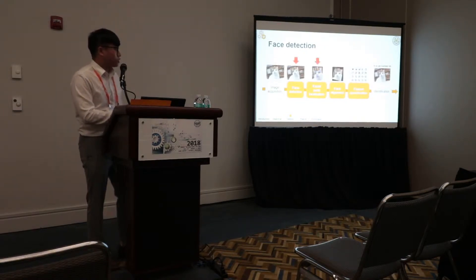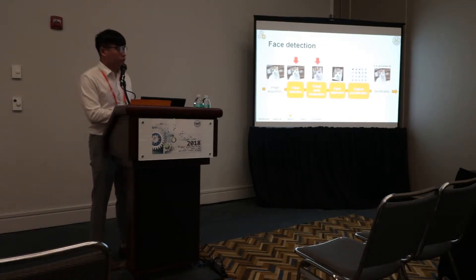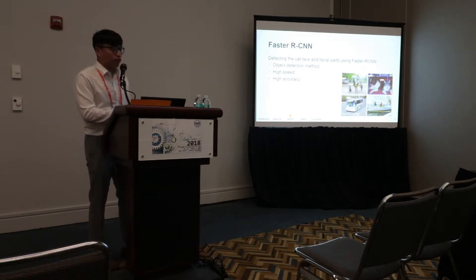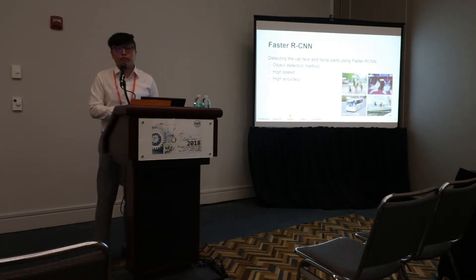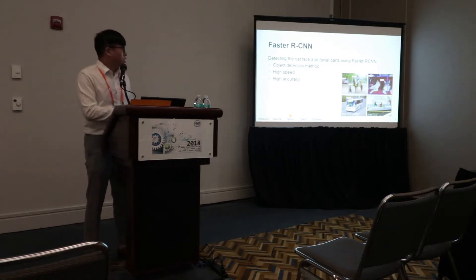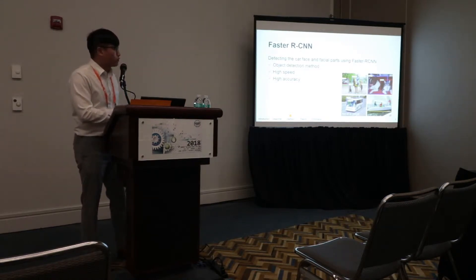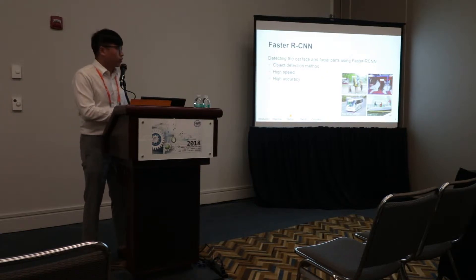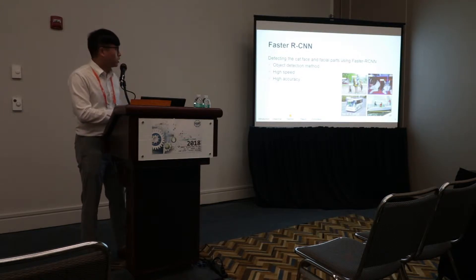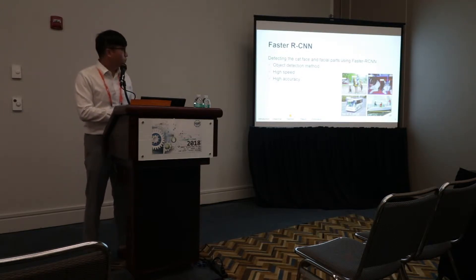The next step is face detection and facial parts localization. I use the deep learning method Faster RCNN to detect the cat face and facial parts. The reason I use Faster RCNN is that it is an object detection method with high speed and high accuracy of detection.